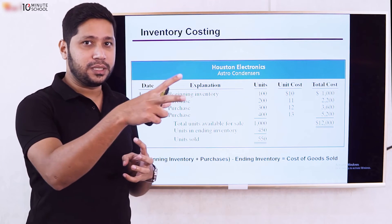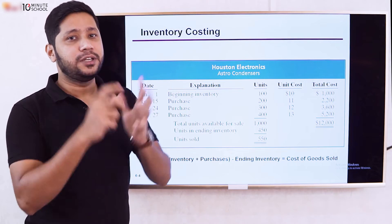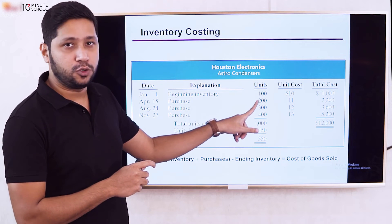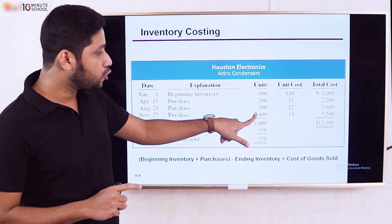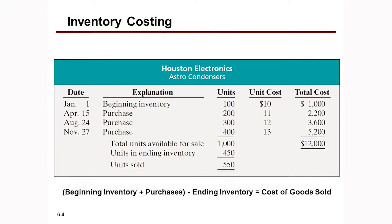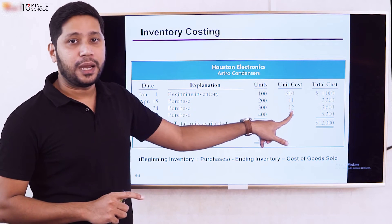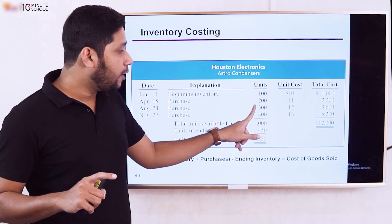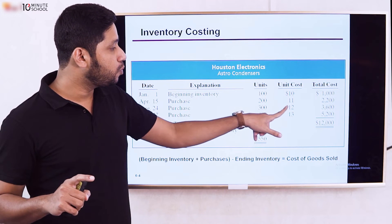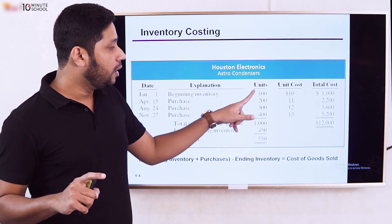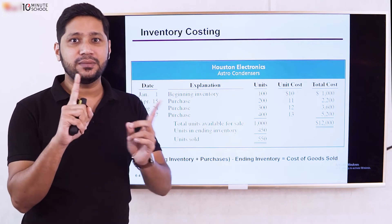We start with the beginning inventory and calculate cost of goods sold. Under FIFO, we take the oldest costs first: 400 × 14 plus 2,500 units at the next price. The ending inventory is $15,000 + $25,000 + $21,000 + $10,000. FIFO and LIFO result in different ending inventory values.